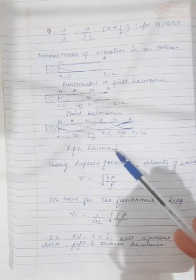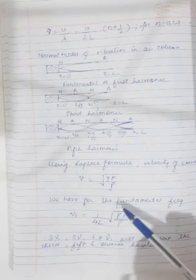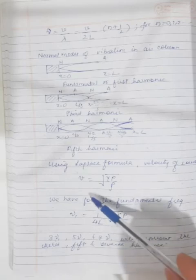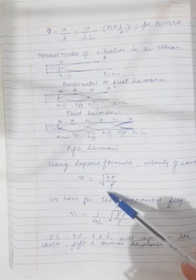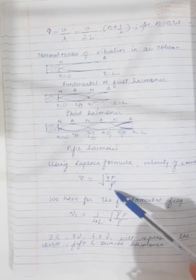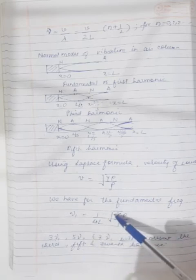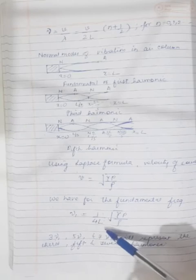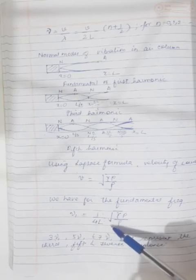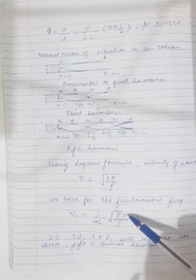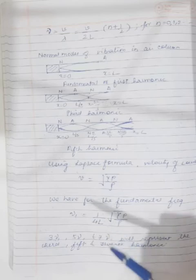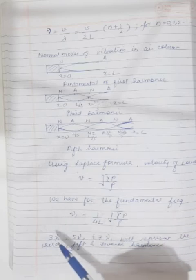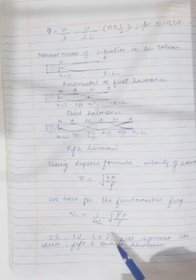Using the Laplace formula, the velocity of sound is v = √(γP/ρ). For the fundamental frequency: ν₁ = (1/4L)·√(γP/ρ), and the third, fifth, and seventh harmonics are 3ν₁, 5ν₁, and 7ν₁ respectively.